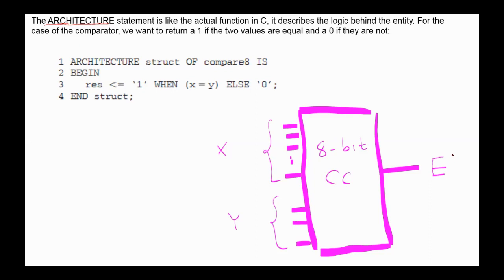For our example, the output is 1 if the two numbers X and Y are equal, and 0 if they are not equal. The beginning statement, line 2, tells us that you are beginning your description of the logic.